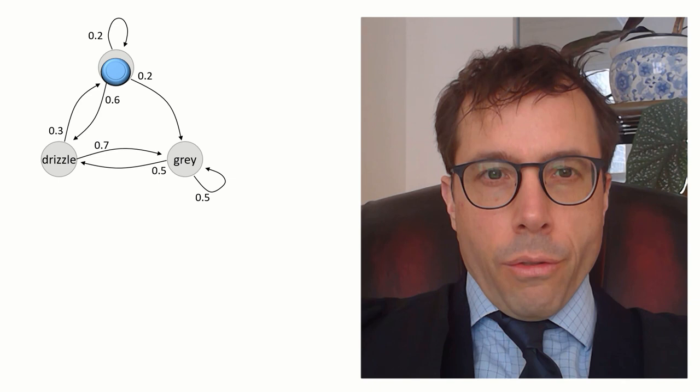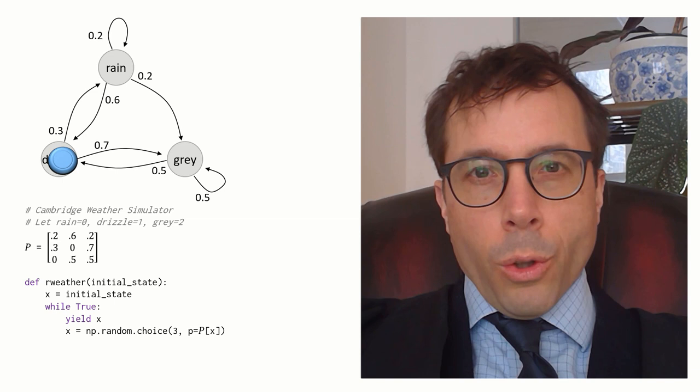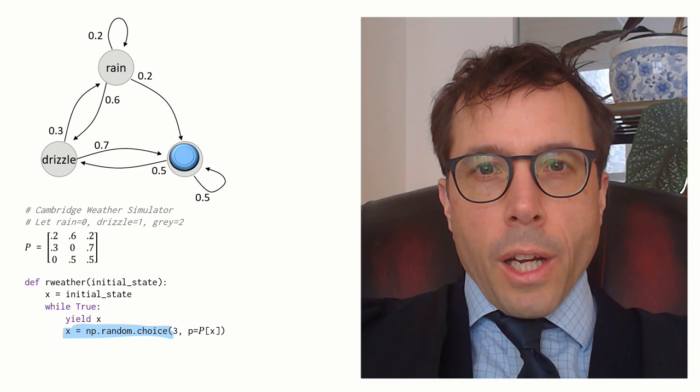In code, it's very simple. I first set up a matrix of transition probabilities, call it P, then every day I just pick the next day randomly by looking up the appropriate row of the P matrix.